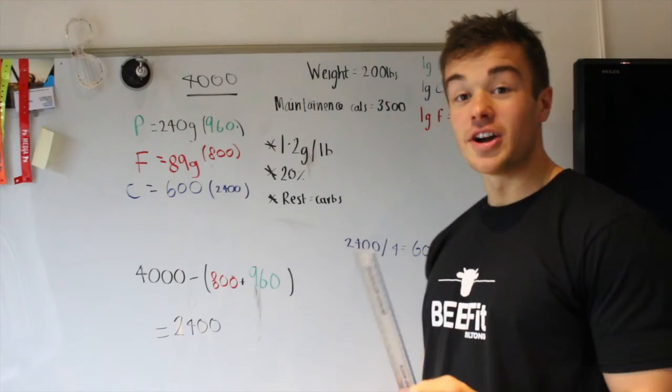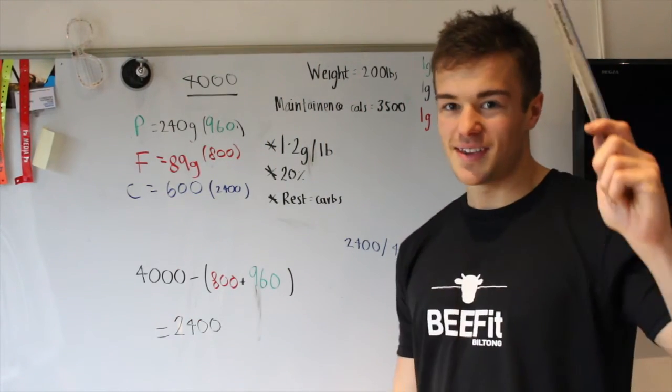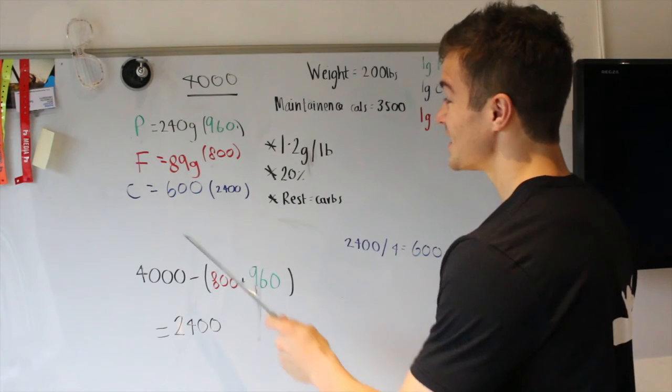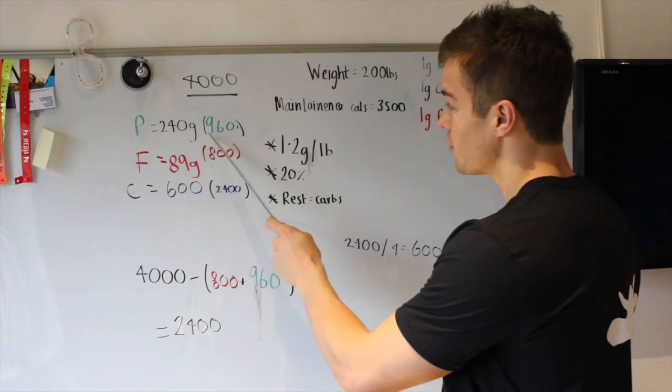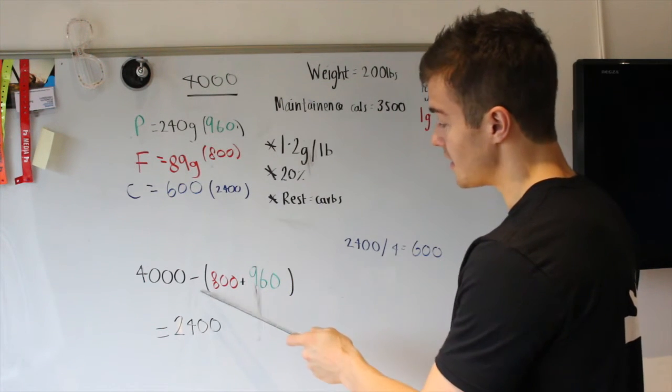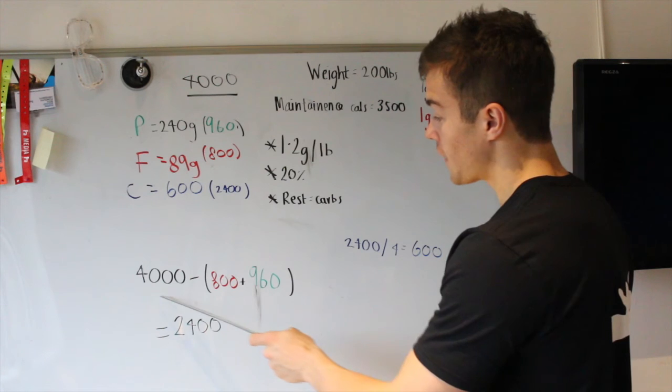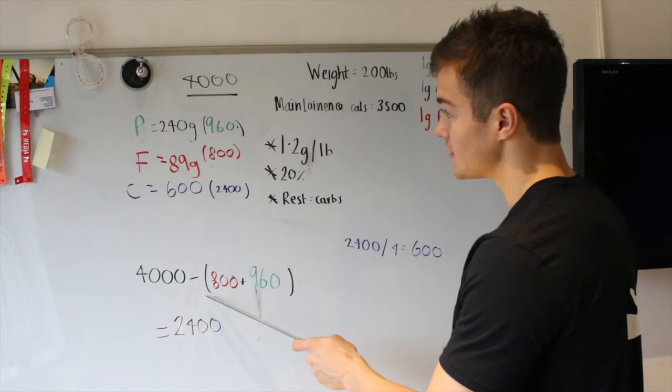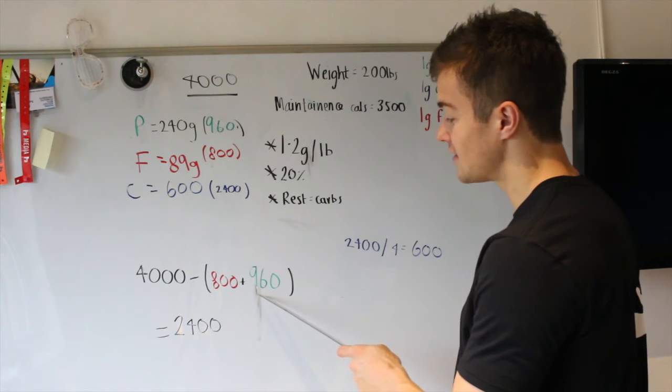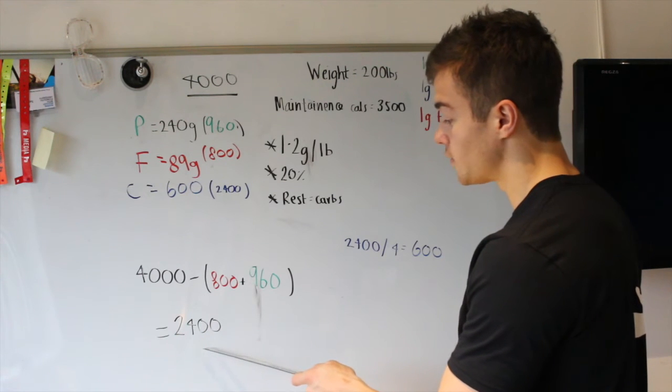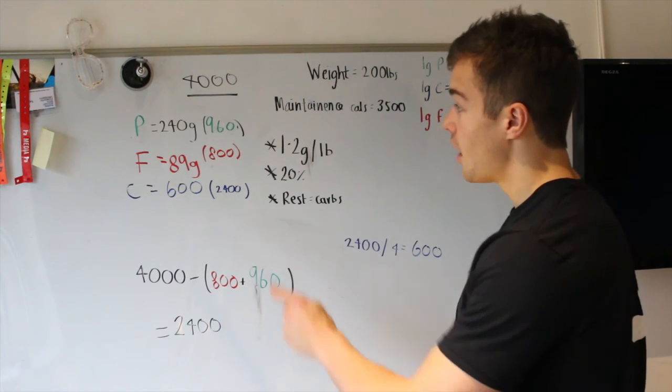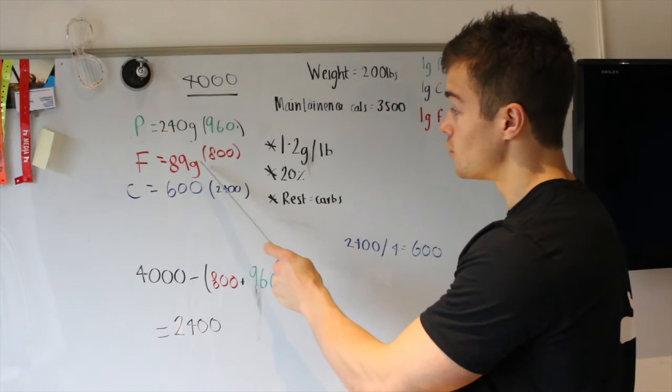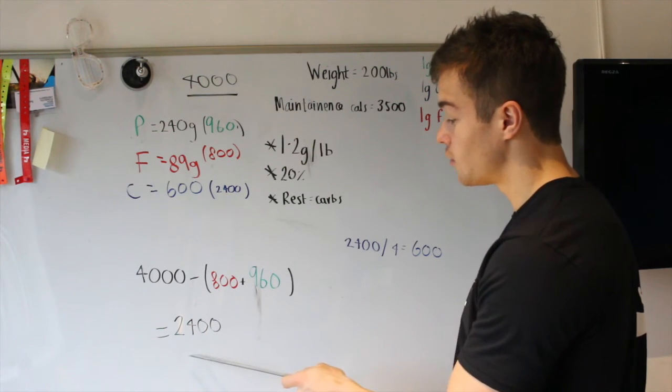So, to calculate the amount of carbohydrates that we need, probably the best thing ever, what we're going to do is we're going to add together the amount of calories that we use in our fats and the amount of calories that we use in our protein. So, 800 plus 960 there. And we're going to do 4,000 minus the amount of calories in our proteins and fats added together. And that will equal 2,400 calories. So, that's going to be the amount of calories that I've got left after I've eaten all my protein, after I've eaten all my fat.